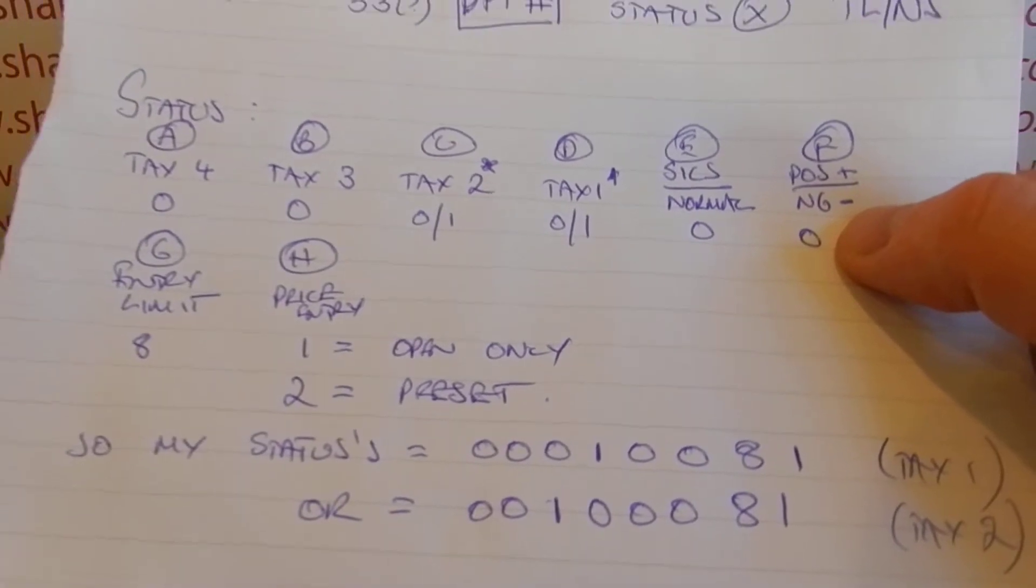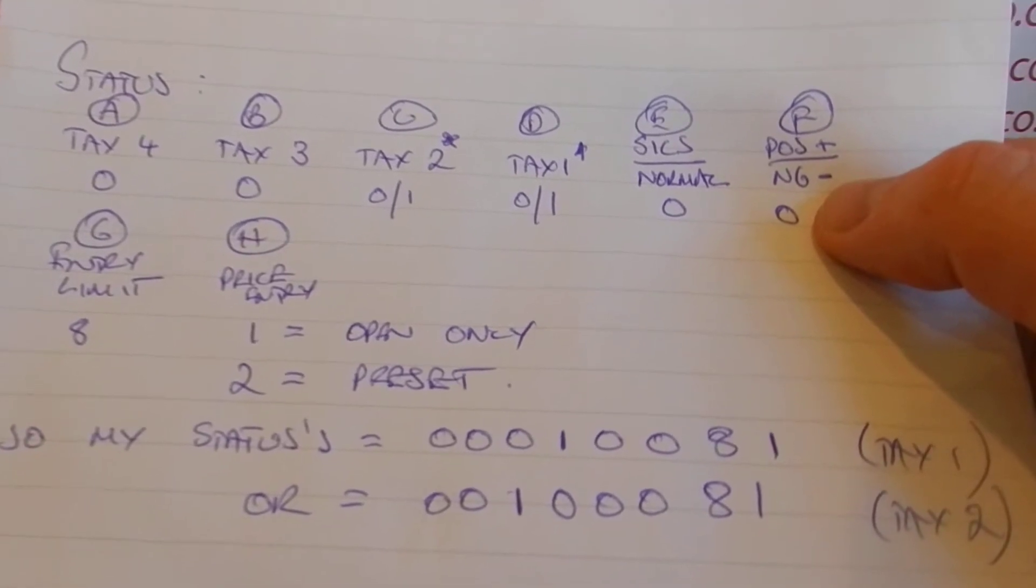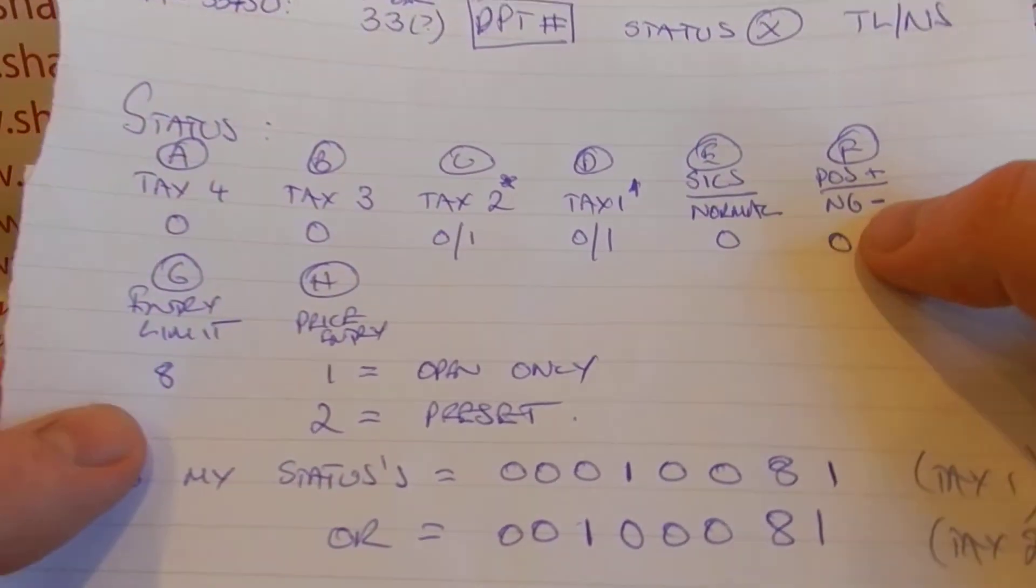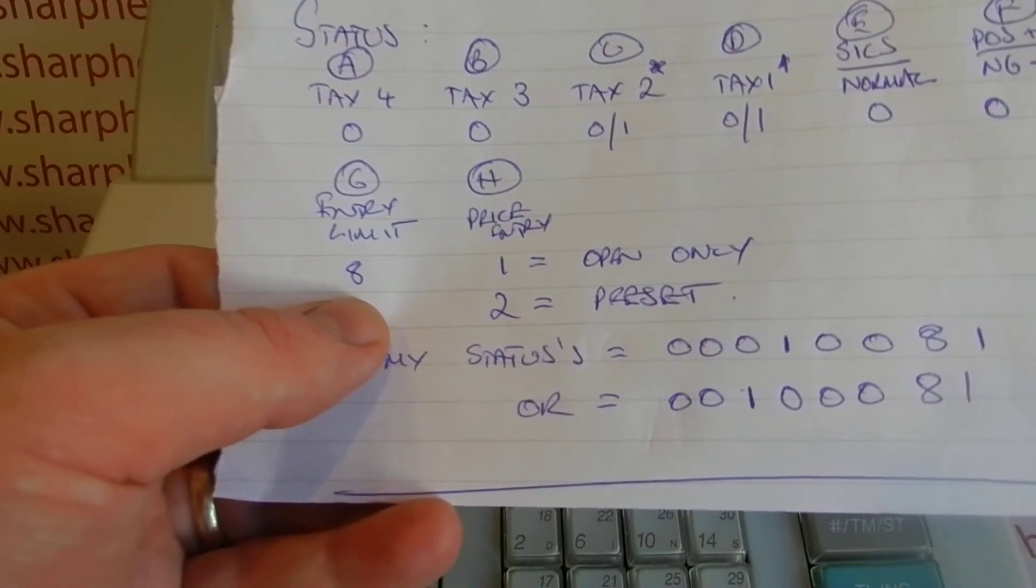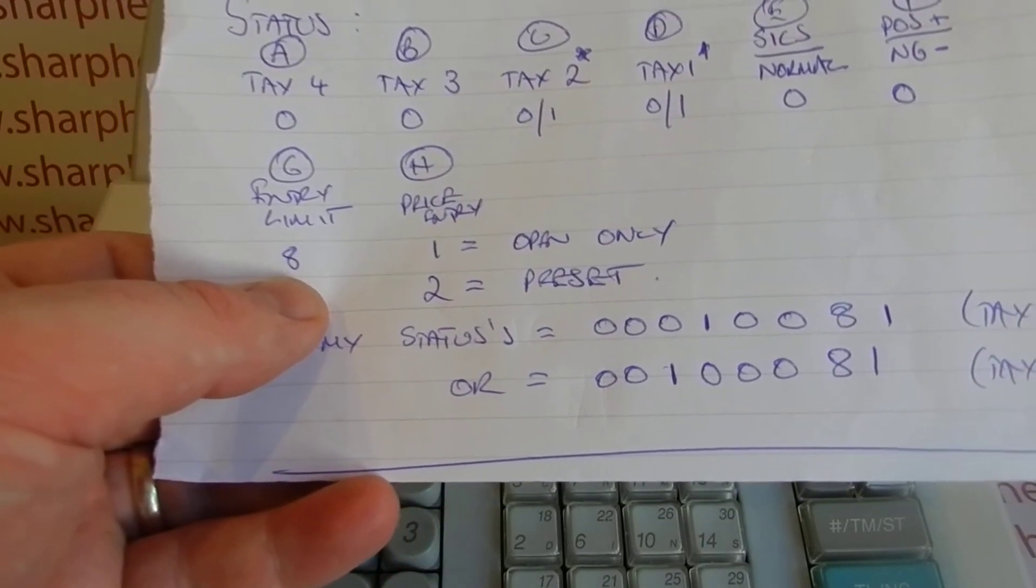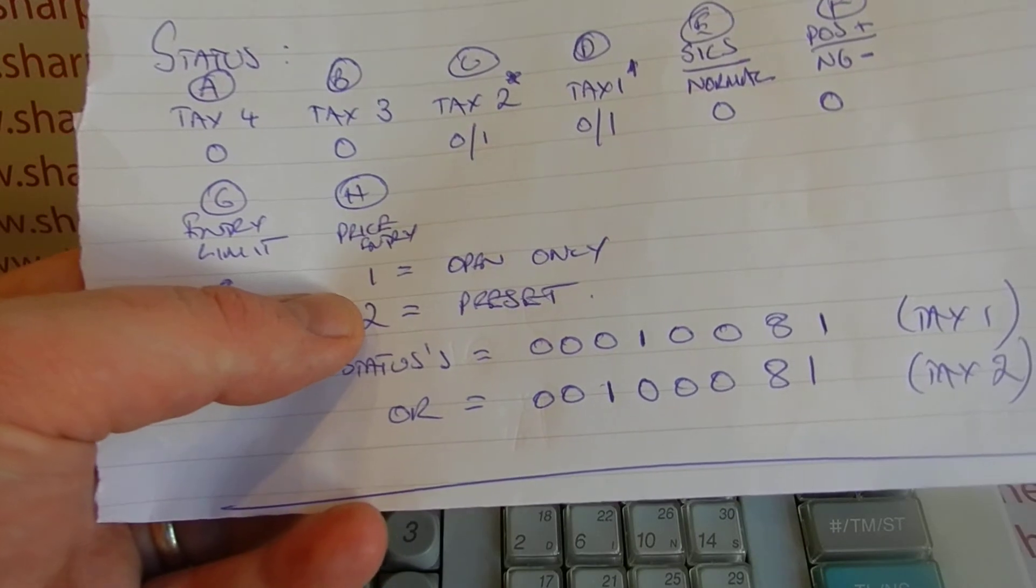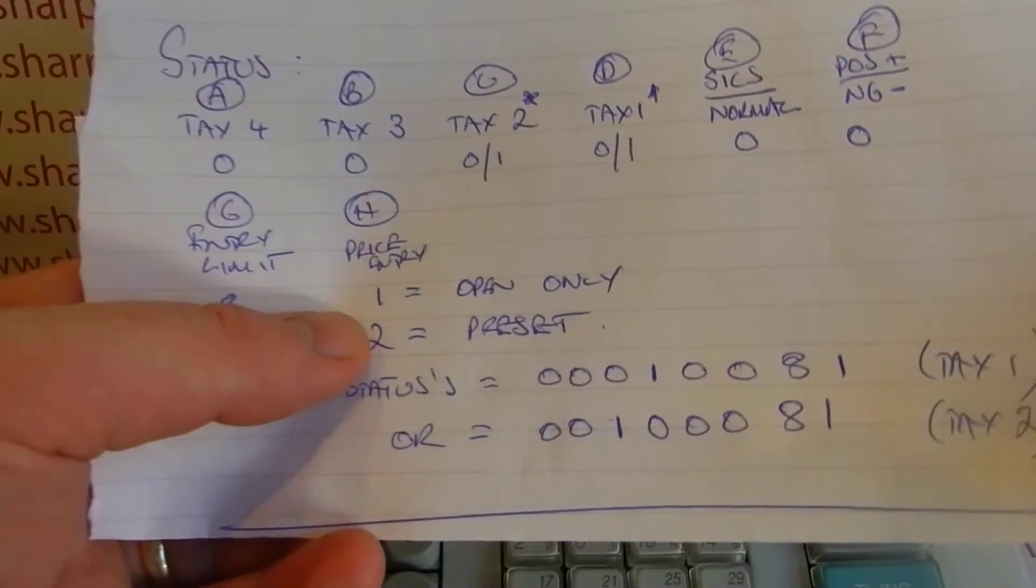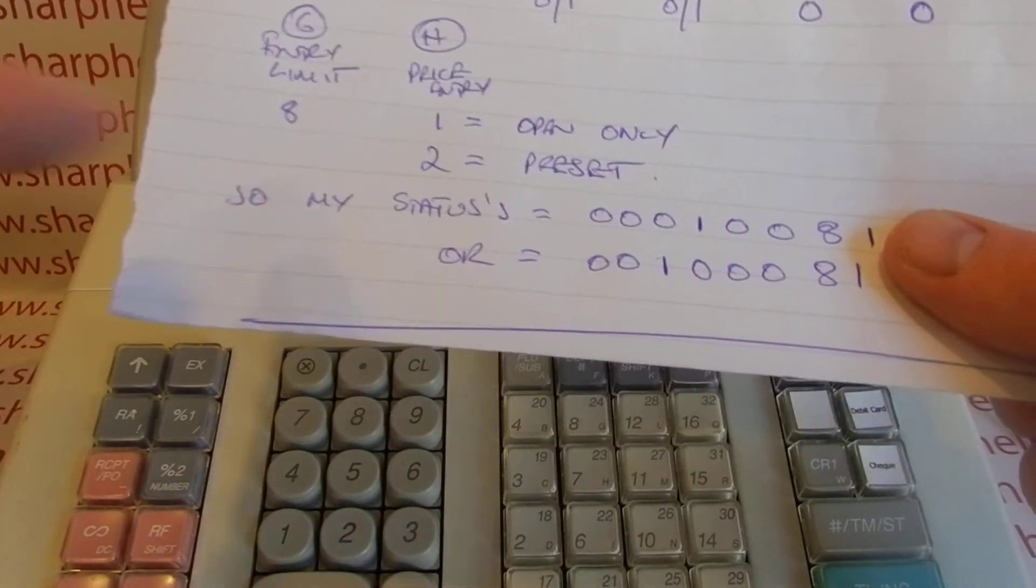You would have a negative department if you were using it perhaps for refunds or redemption gift voucher redemptions or bottle deposit returns. That sort of thing is quite unusual, so we're going to stick with standard programming, so that's going to be a 0 to be positive. The one that you might use is entry limit. On default, it's set to 8. This is where you limit the amount of the value of a sale that can be put for a specific department. Obviously, we can look at that separately in a different video. Then price entry, the last one. If your items—if this is a retail machine—any departments don't have preset prices, then you're always going to have this set to 1, which is open only. If you're having presets, any preset departments need to be set to 2.